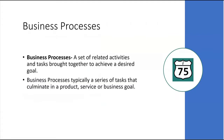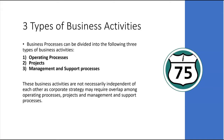Let's start with the basics. Business processes are a set of related activities and tasks brought together to achieve a desired goal. Business processes are typically a series of tasks that culminate in a product, a service, or a business goal. There are three types of business activities: number one, operating processes; number two, projects; and number three, management and support processes.